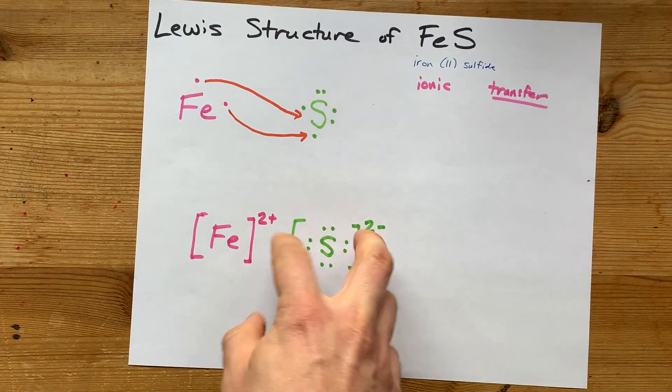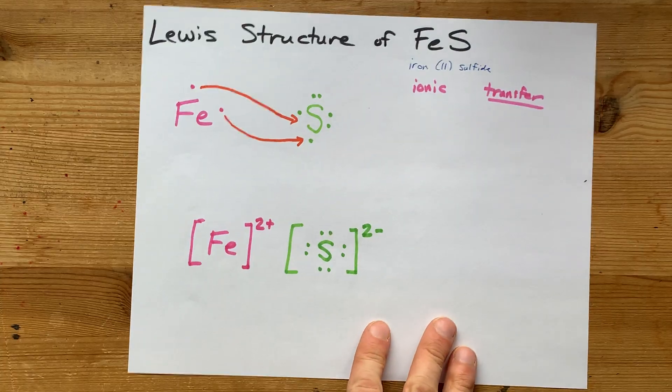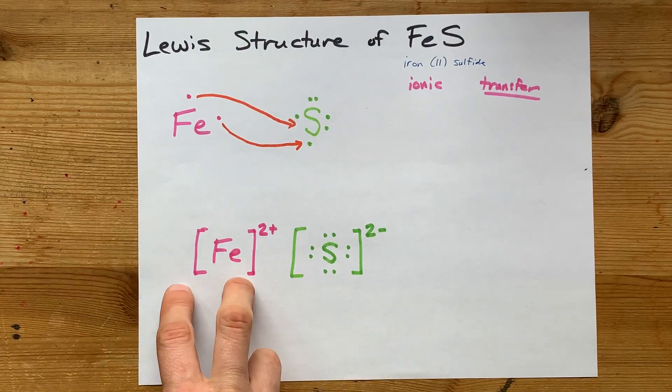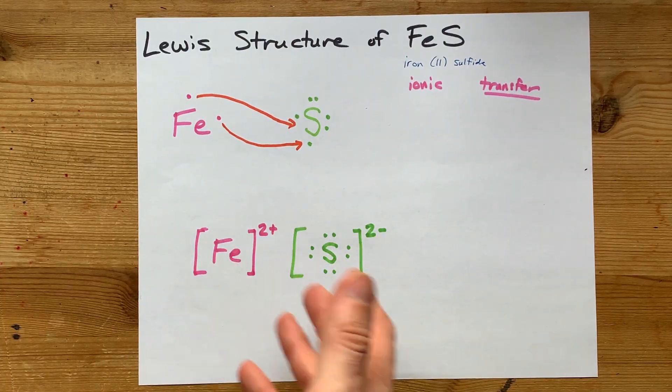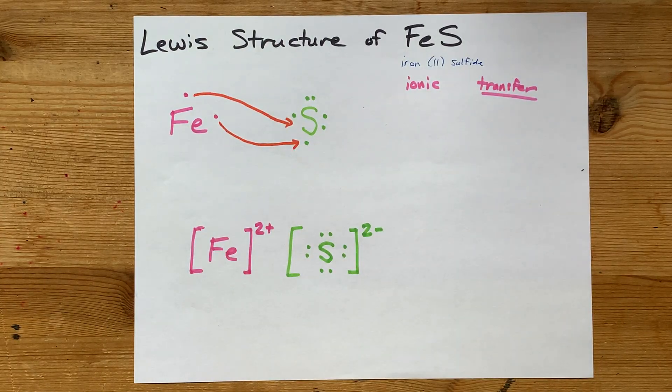Now, all the charges add up to zero because the compound as a whole has a total charge of zero. And the square brackets here represent the fact that each of these particles is an ion. This is the complete Lewis structure for iron two sulfide.